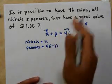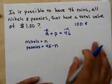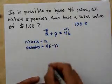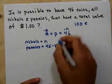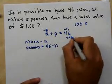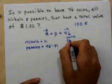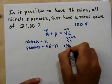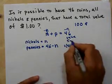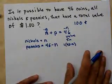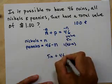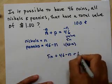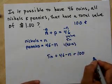So, here are my numbers. Now, I know what the total value has to be, $1.00. Now, nickels are 5 cents, and pennies are 1 cent. So, let's do the value. This would be 5n, and this would be 1 times 46 minus n, right? Is it possible to do this with 46 coins? Let's see. Can I get 5n plus 46 minus n to equal $1, 100 pennies? Let's see.